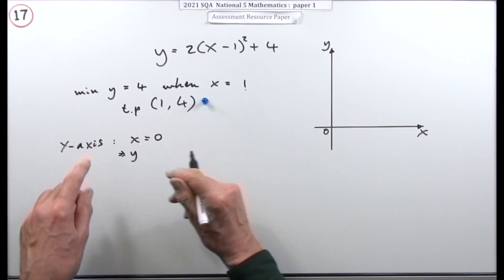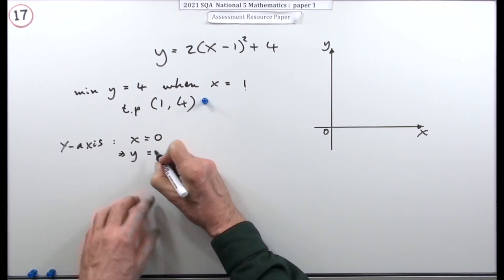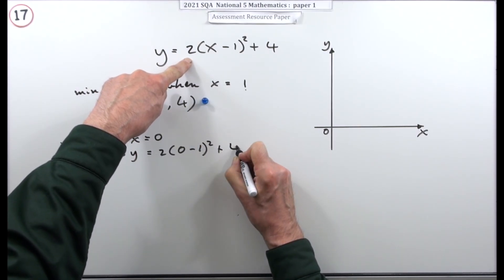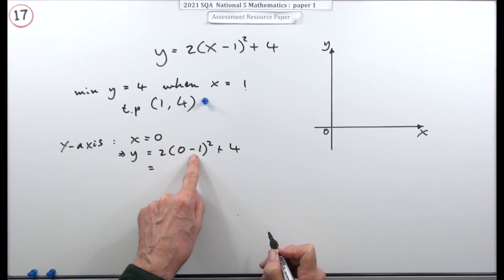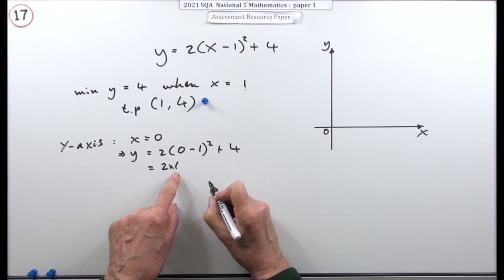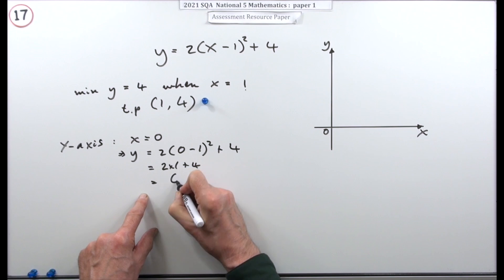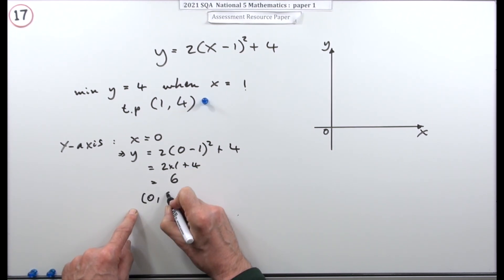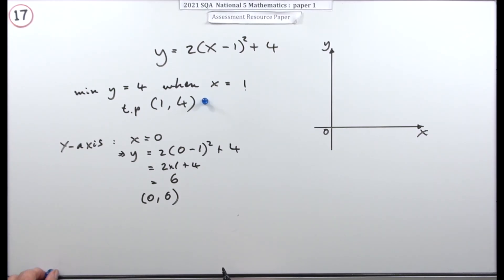In which case just put 0 into that. y is going to be 2 times 0 minus 1 squared plus 4. Now that's negative 1. Negative 1 squared is 1. So it's 2 times 1 plus 4. Which is 6. So it's going to cut the y axis at 0, 6. That gets a mark.